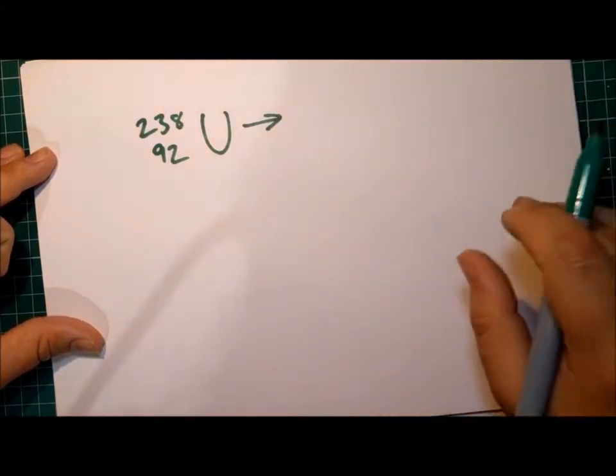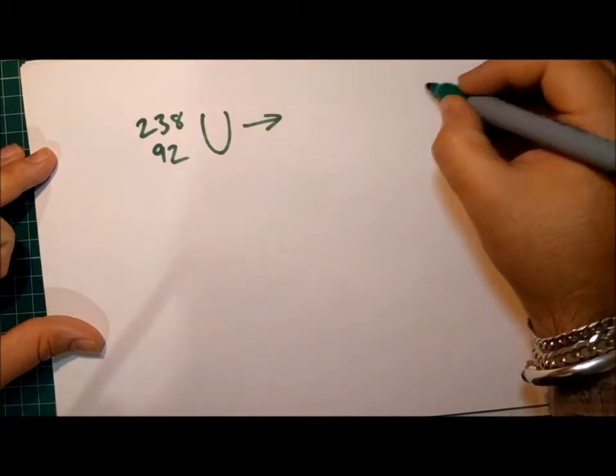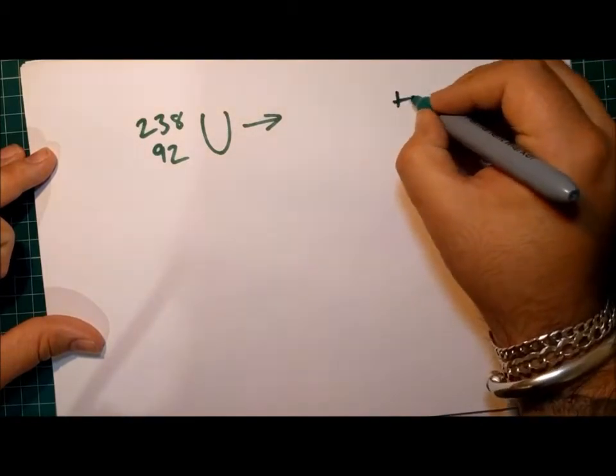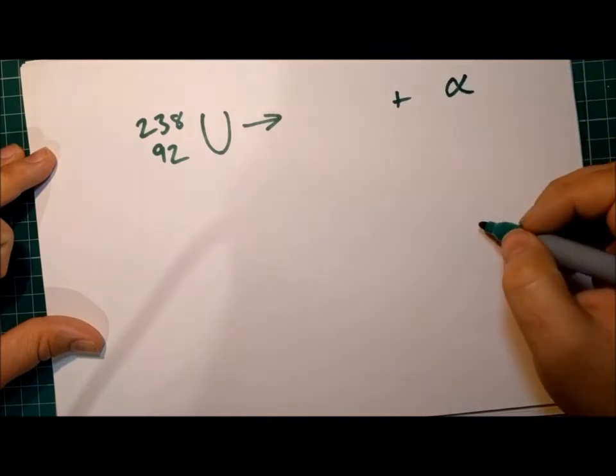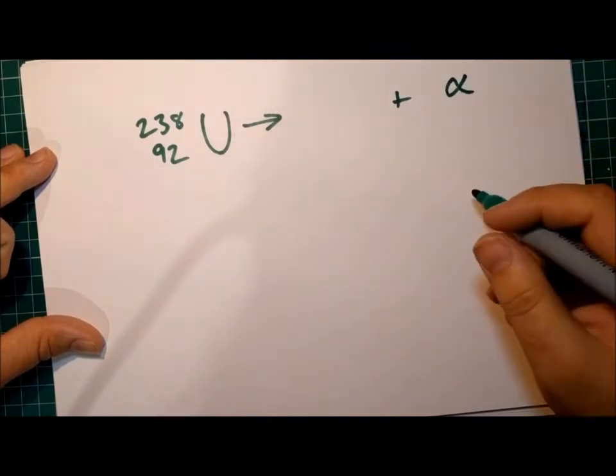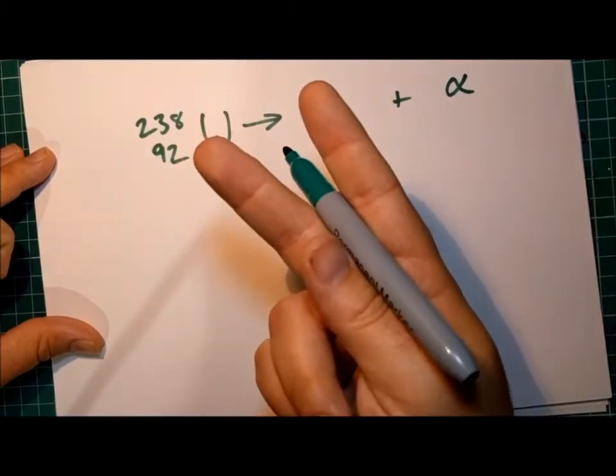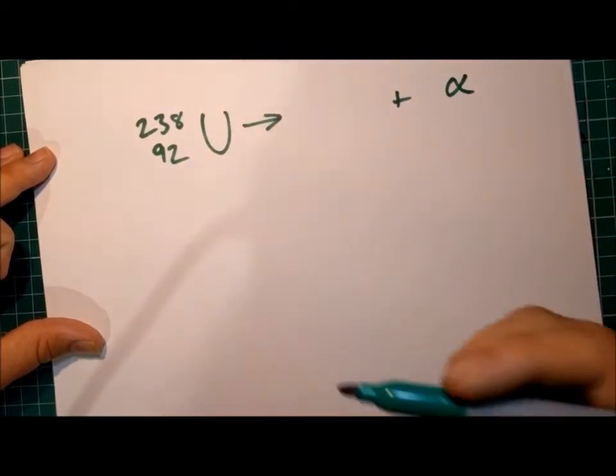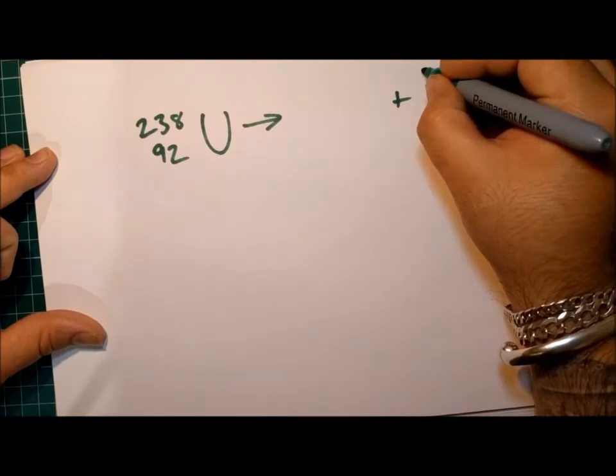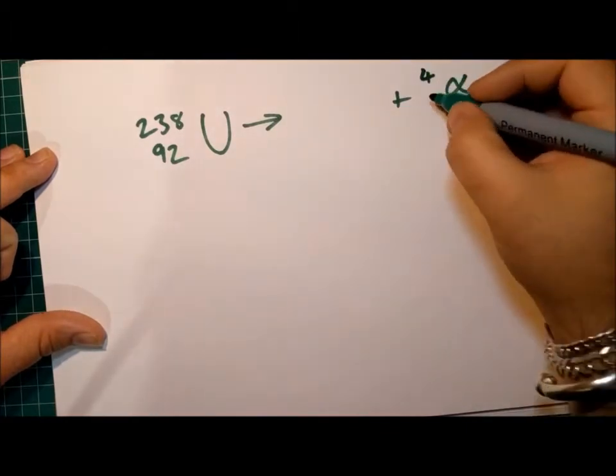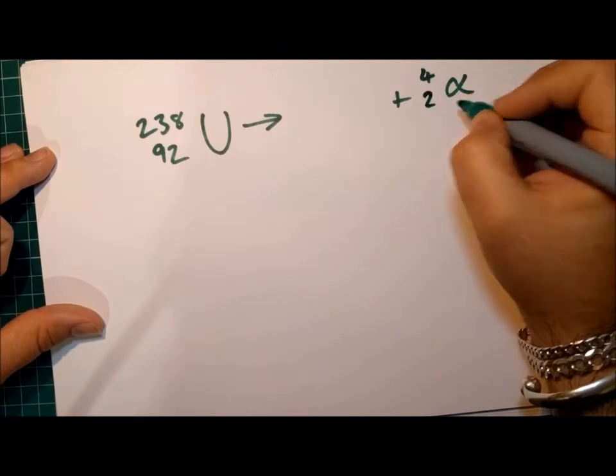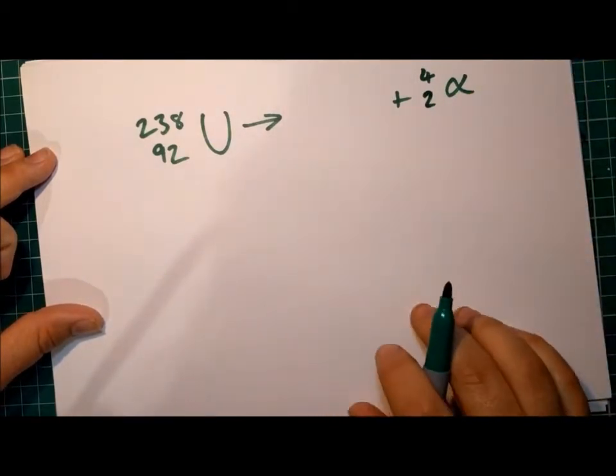So what's going to form is going to have, let's draw the alpha particle first. And it will make a lot more sense. So there's going to be something plus an alpha particle. Now we use the Greek letter alpha for an alpha particle. And as we mentioned before, it contains two neutrons and two protons. So therefore, it's going to have a mass of four. It's going to have an atomic number of two. So that's our alpha particle.